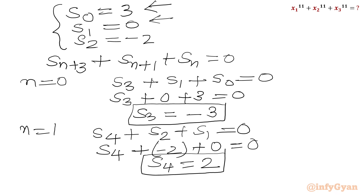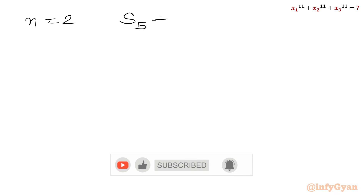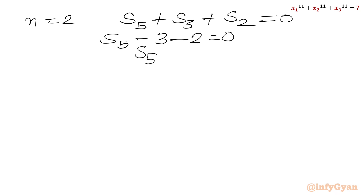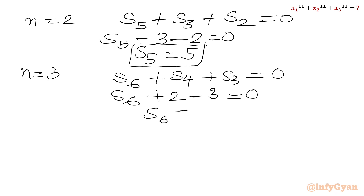Plugging n = 2 gives S5 + S3 + S2 = 0, so S5 − 3 − 2 = 0, giving S5 = 5. Plugging n = 3 gives S6 + S4 + S3 = 0, so S6 + 2 − 3 = 0, giving S6 = 1.